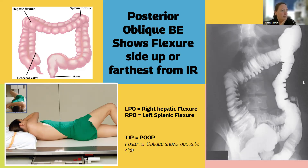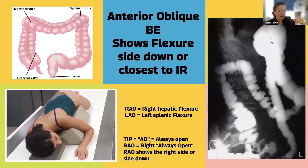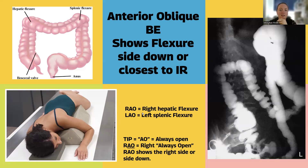Here's a tip: posterior oblique shows the opposite side — P-O-O-P, if that helps you. If posterior shows the side up, anterior is going to show the side down. So in an RAO, her right anterior is touching the table. Anterior obliques show the side closest or the side down. RAO will show the right because that's the side down; LAO will show the left. A word association: AO means 'always open' — RAO means the right is always open.